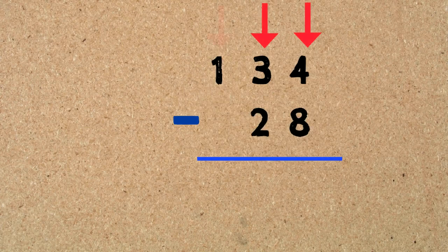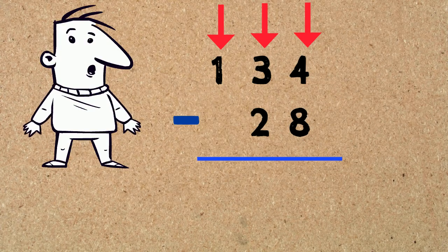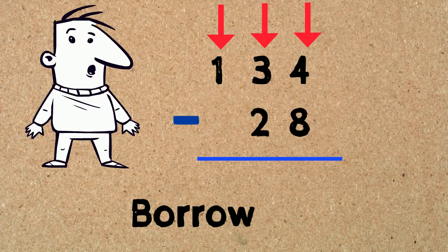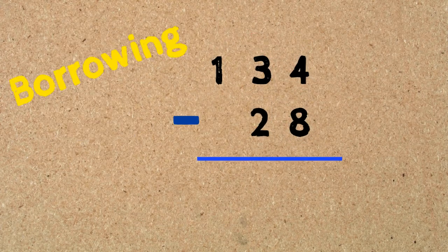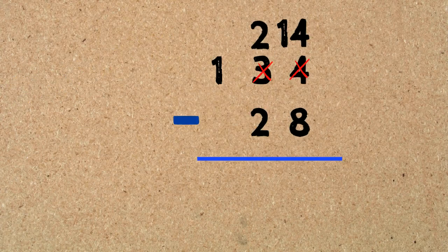We start with the ones column: 4 take away 8 — and that's when it gets a bit tricky. Four is smaller than eight, so what do we do? When the number on top is smaller than the number at the bottom, you need to borrow from the number right next to it. We borrow a 1 from the tens place, which is a 3 — that changes the 3 to a 2. But that borrowed 1 is actually a 10, which changes the 4 to 14.